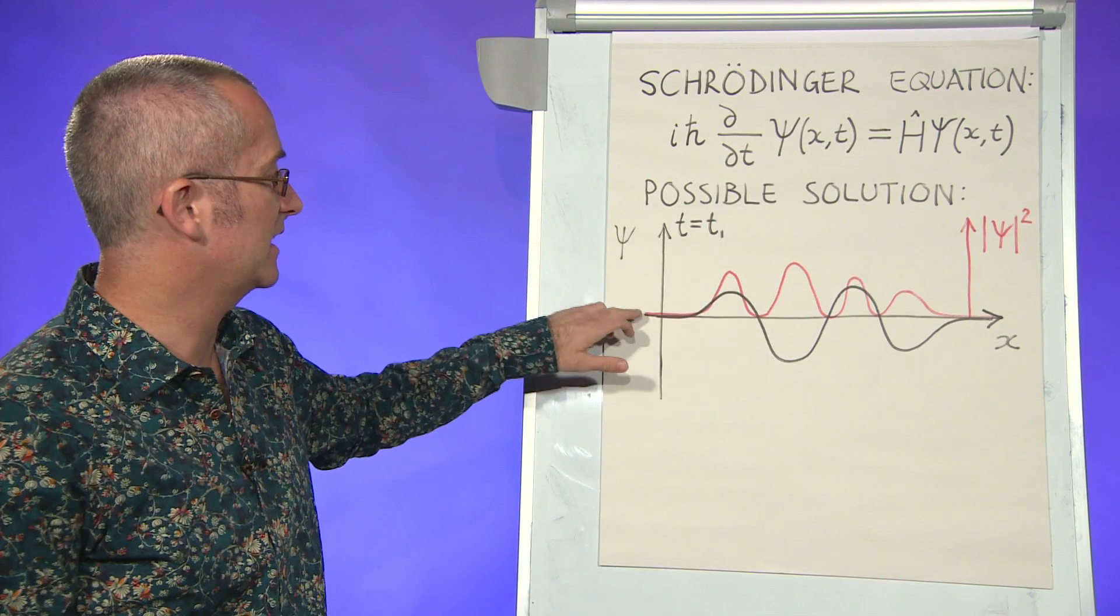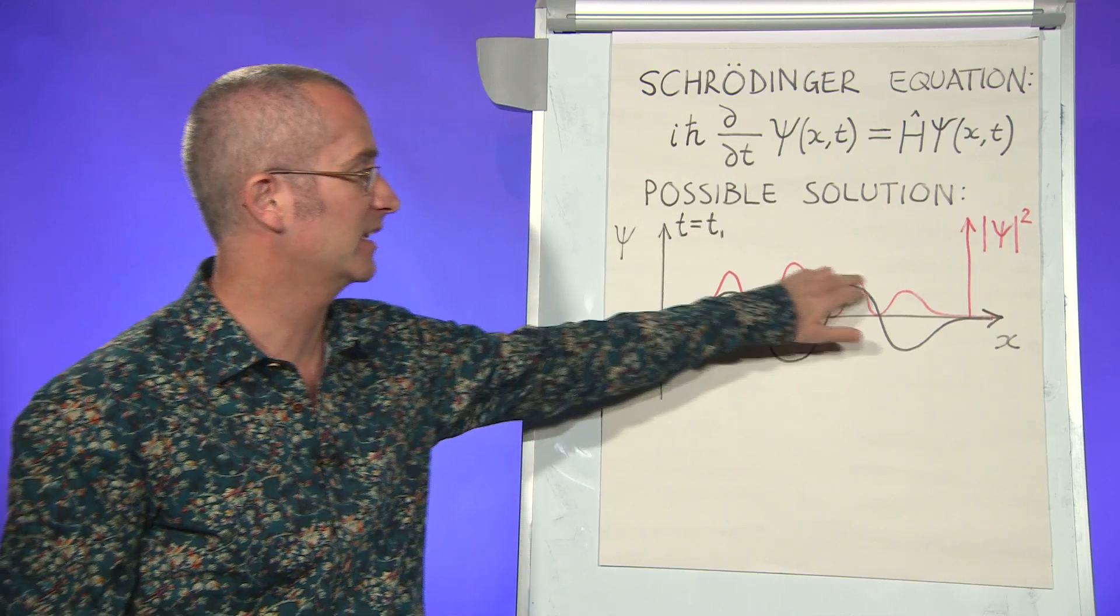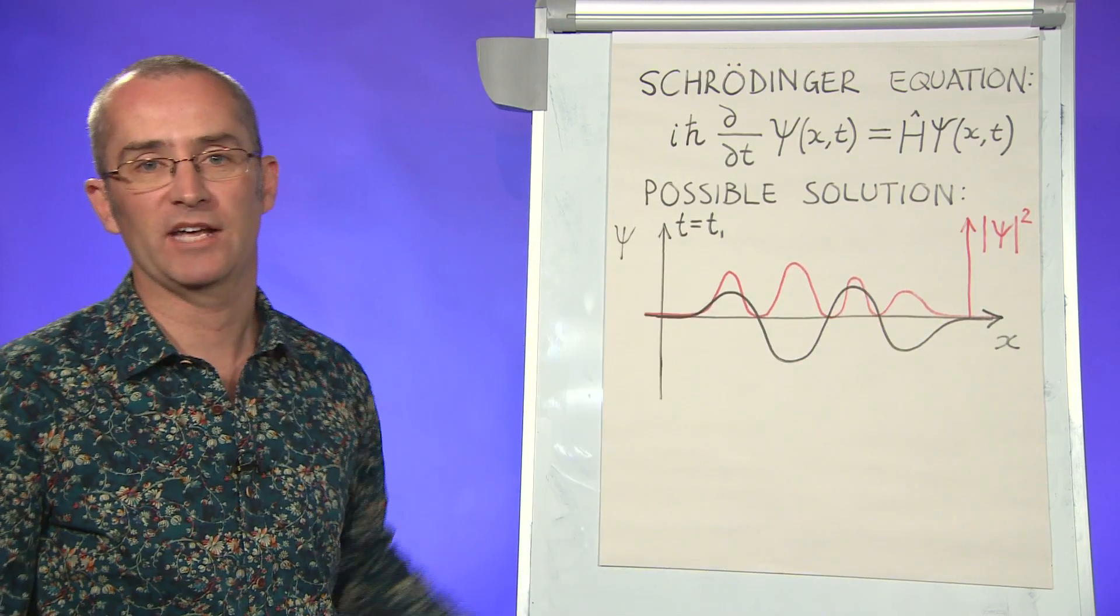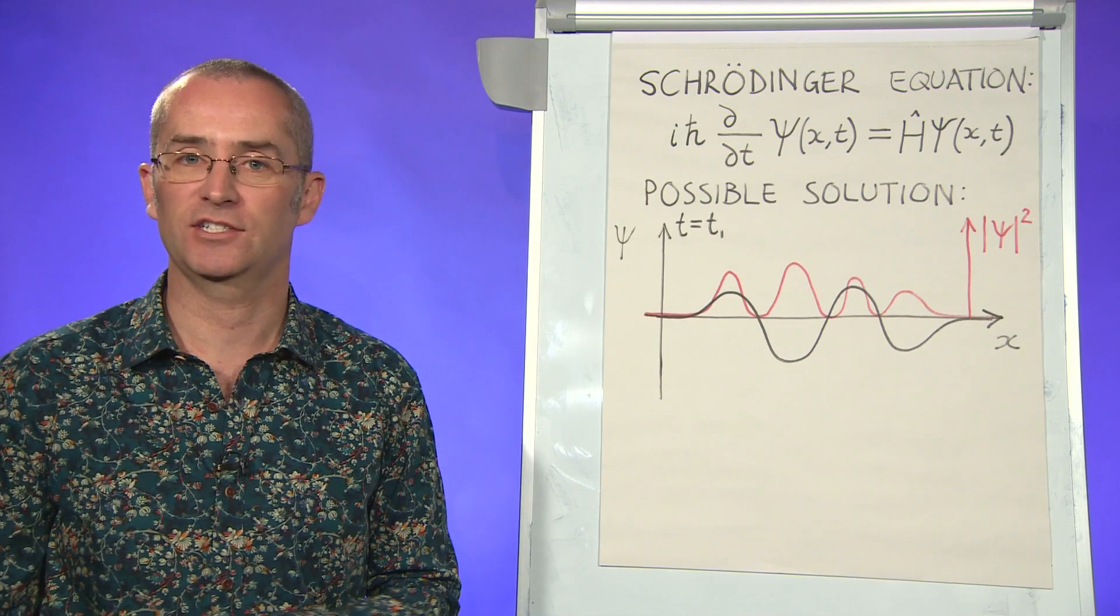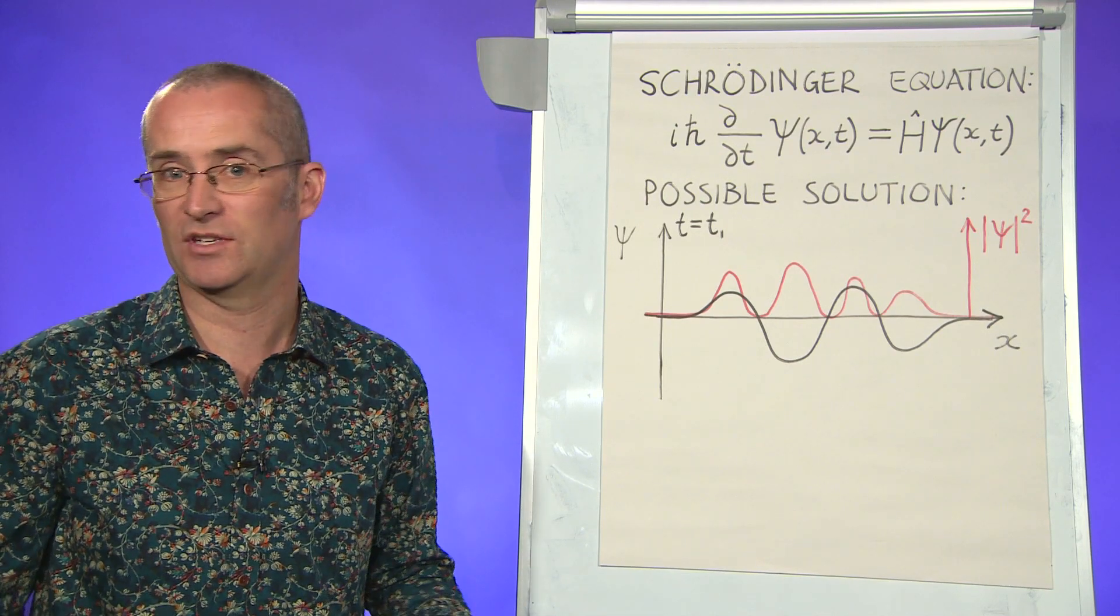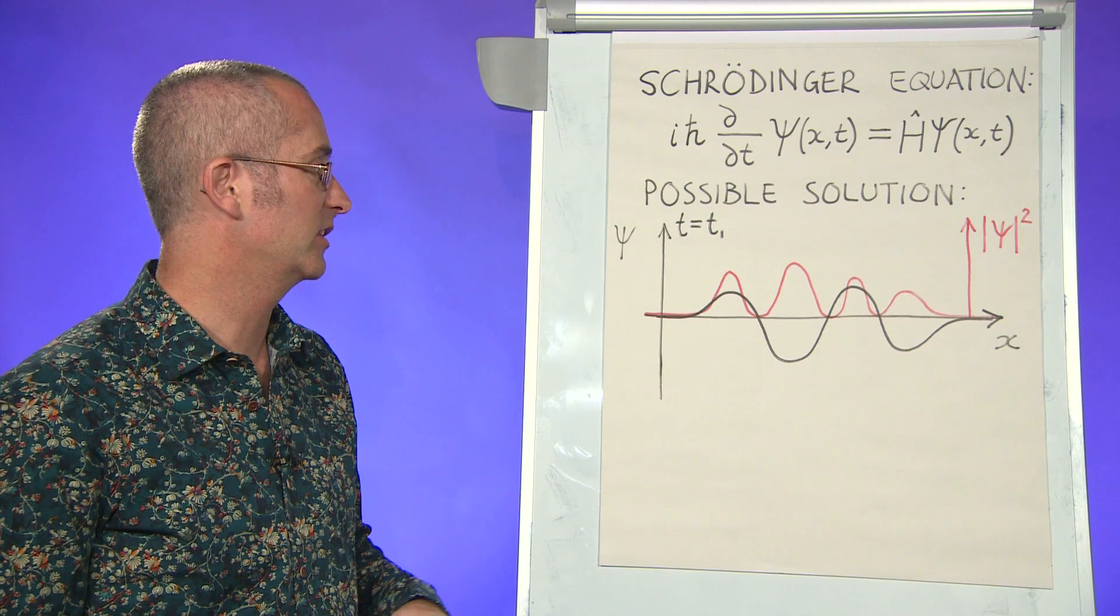And depending on the situation, you might get some sort of solution like this black line here. And so this looks something like a wave from classical mechanics, but so far it's just the solution to a differential equation with no obvious connection to the real world.